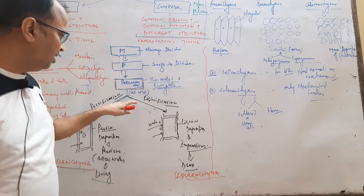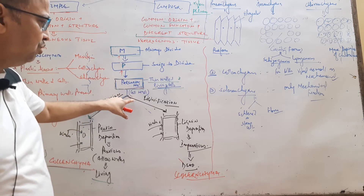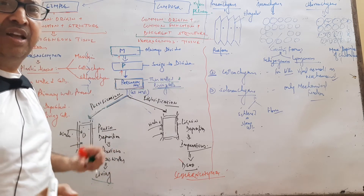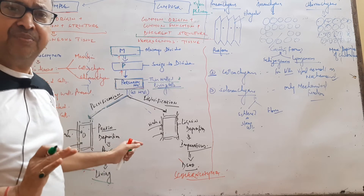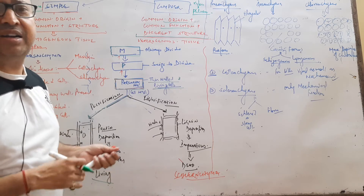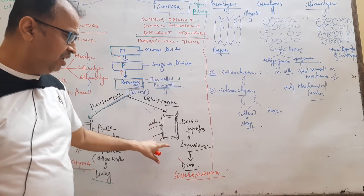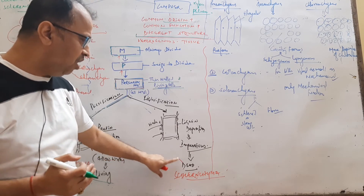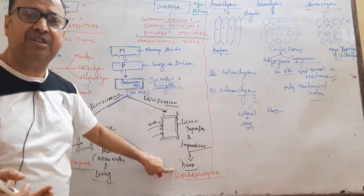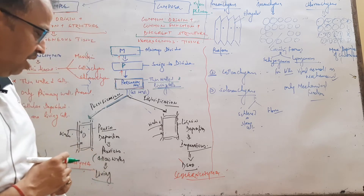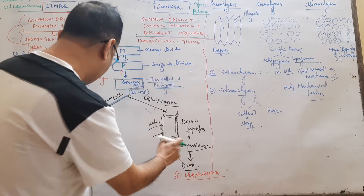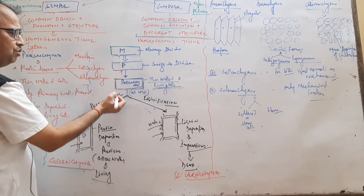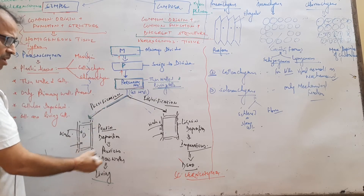Another change in the cells is the heavy deposition of a chemical called lignin. Lignin is a hard chemical layer which does not allow water into the cell, and ultimately the cells become dead. It forms an impervious layer, making the cells dead. This turns the tissue into another type called sclerenchyma. In simple tissue there are three tissues: parenchyma, colenchyma, and sclerenchyma.